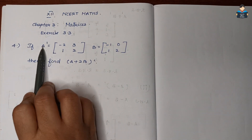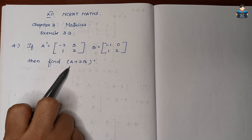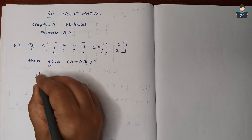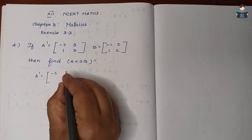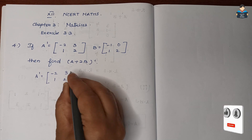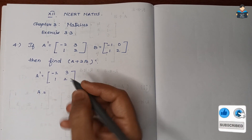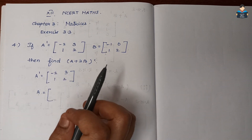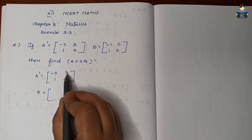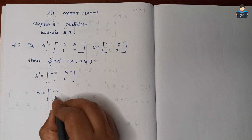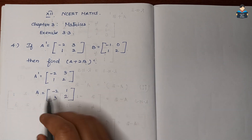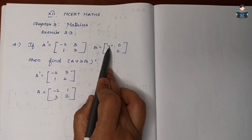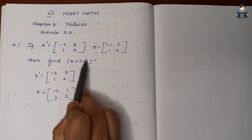So first we find the value of A from A transpose. A transpose is equal to [[-2, 3], [1, 2]], so A matrix — taking rows as columns — will be [[-2, 1], [3, 2]]. Next, B is given, so now we find 2B.